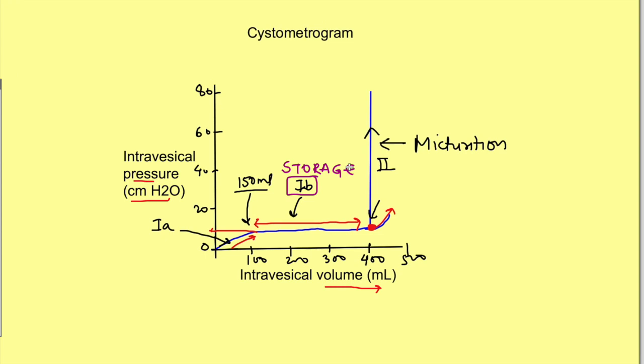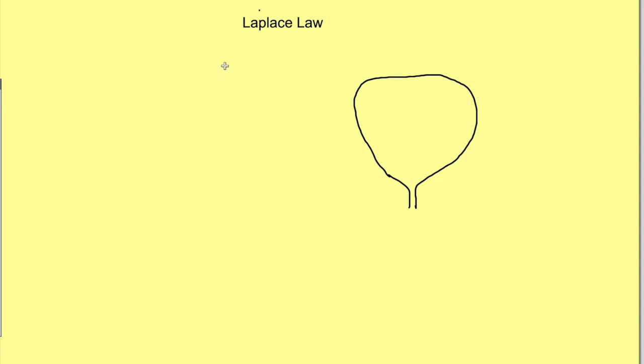It is explained by Laplace law. Urinary bladder doesn't act like an elastic material; rather it is a plastic material, that means it can change in shape. As urine starts filling in the bladder, initially there is a rise, but then it stretches and relaxes, causing increase in the radius of the bladder.